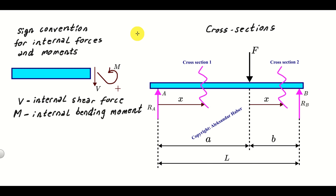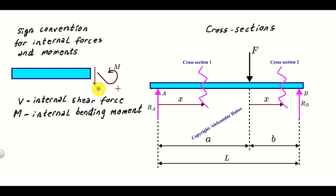In order to construct the internal shear force and internal bending moment diagrams, we need to introduce the sign convention for these quantities. The cross-section shows internal shear force V and internal bending moment M. If V is oriented in the defined direction, its sign is positive. If the internal bending moment acts counterclockwise, its sign is positive.